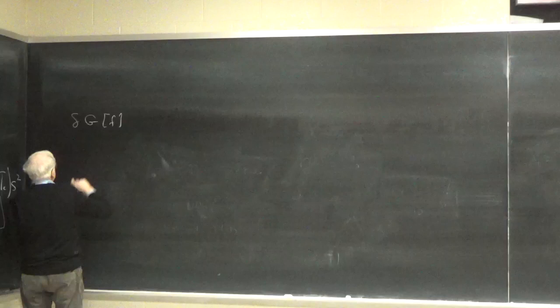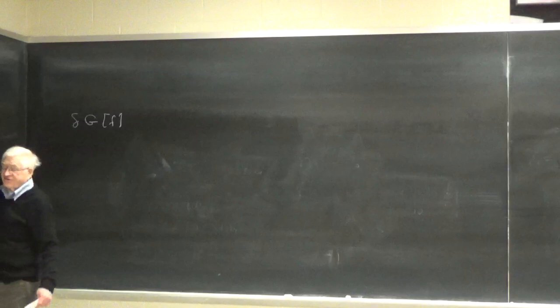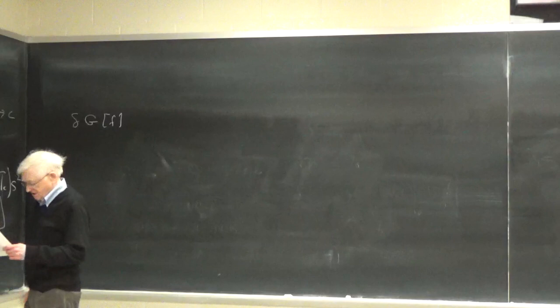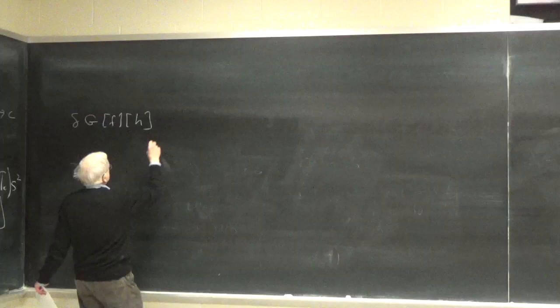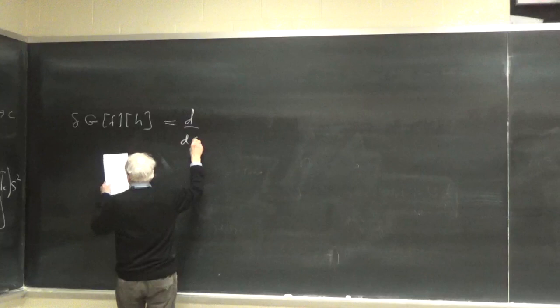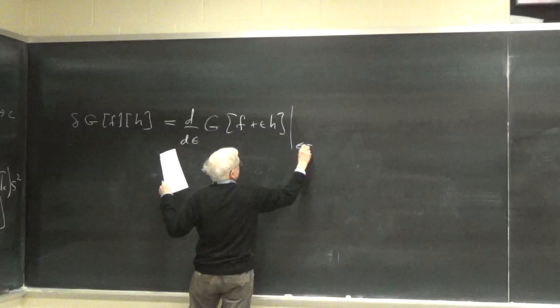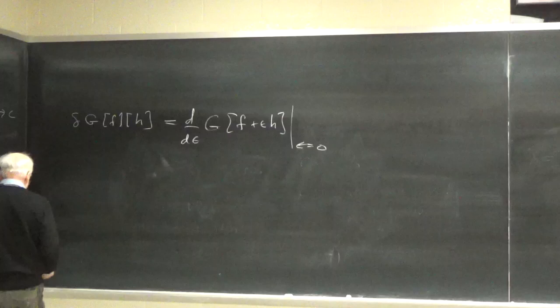The idea, first of all, is that of a functional. A function maps a number to a number; a functional maps a function to a number. The variational derivative can be thought of as the ordinary derivative of a functional where you change F by ε·H, evaluated at ε = 0. This is a nice way of thinking about it that avoids ambiguities.